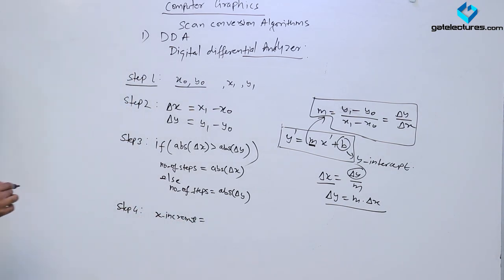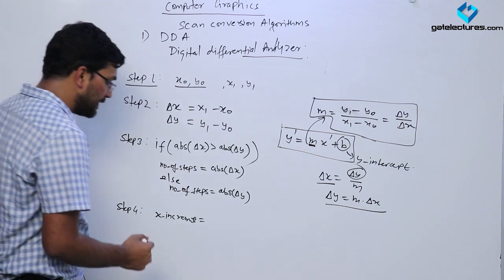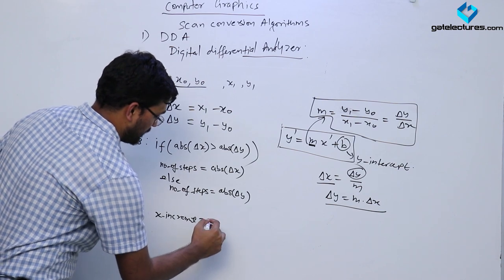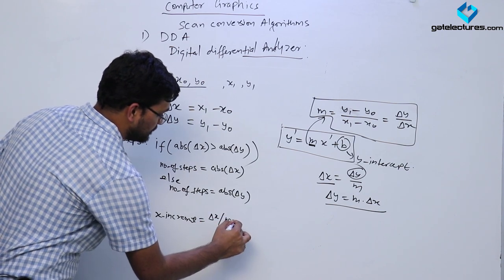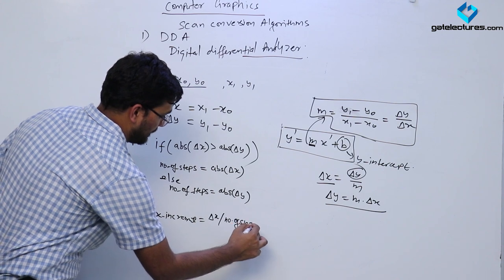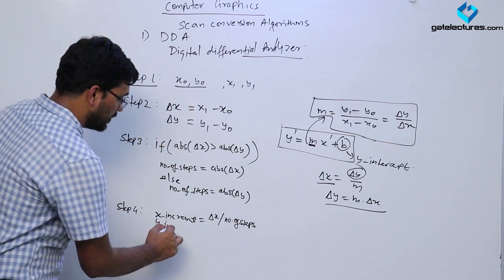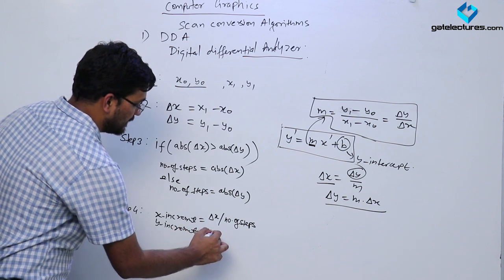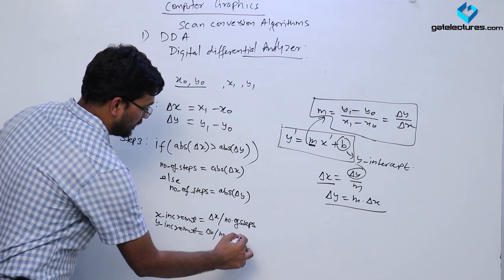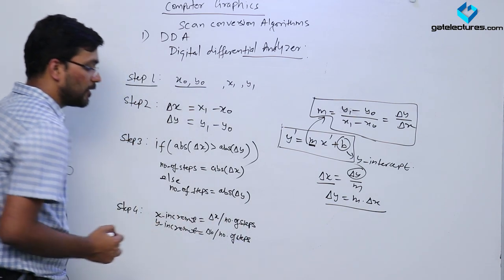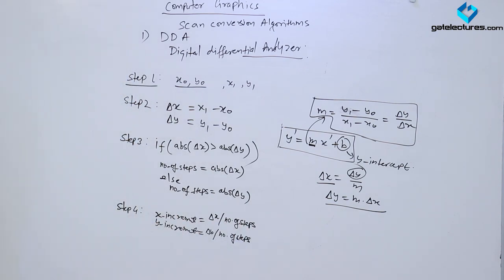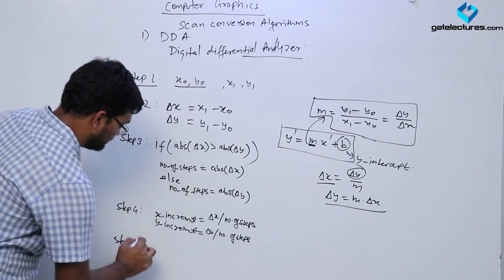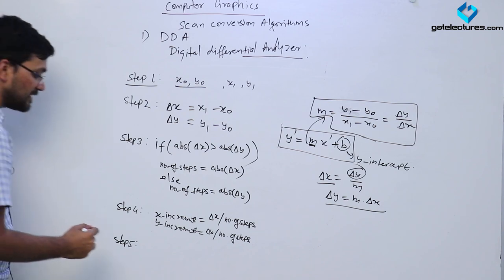Step 4: I have to compute a variable x-increment, which is delta x divided by number of steps. Then I have to compute another variable y-increment, which is delta y divided by number of steps.